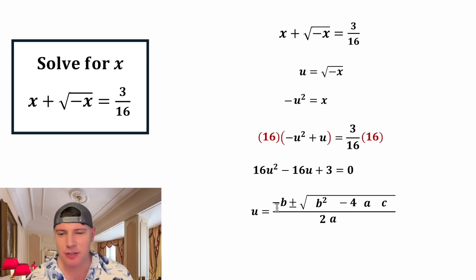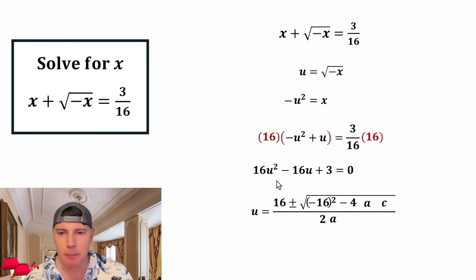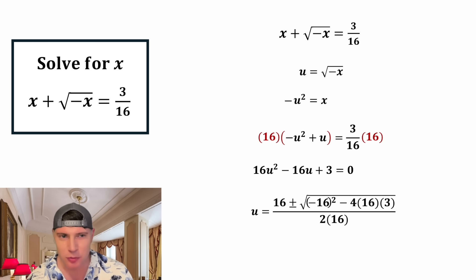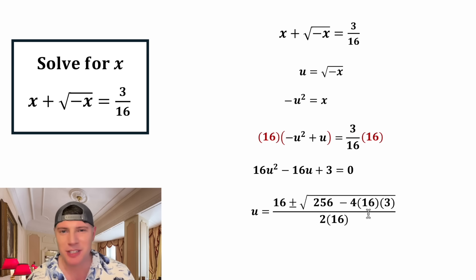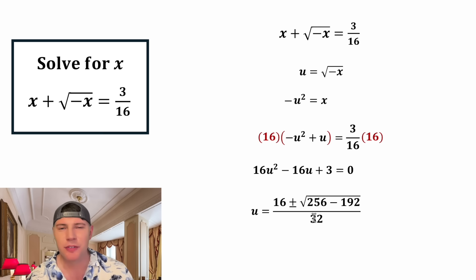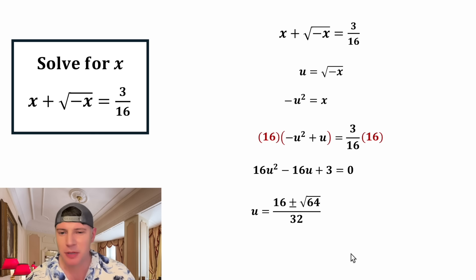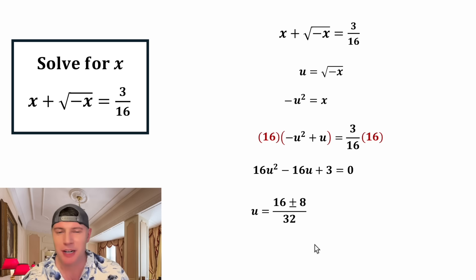Let's plug in the values. Negative b will be negative negative 16, which is positive 16. b squared is negative 16 squared, 4ac is 4 times 16 times 3, and on the bottom 2a is 2 times 16, which is 32. Inside the square root, negative 16 squared is 256, and 4 times 16 times 3 is 192. So we have 256 minus 192 inside the square root, and 2 times 16 is 32 on the bottom. 256 minus 192 is 64, and the square root of 64 is 8.